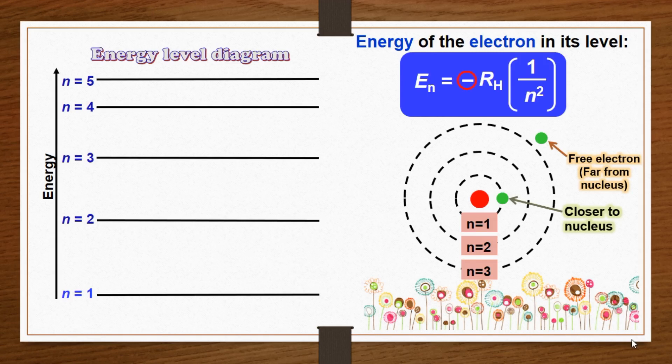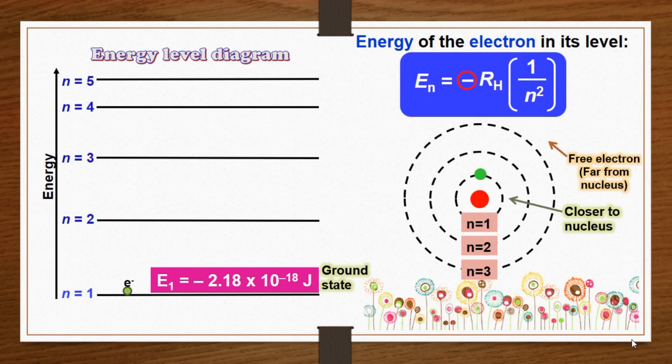As the electron gets closer to the nucleus, En becomes larger in absolute value but also more negative. The most negative value is reached when n equals 1, which corresponds to the most stable energy state that is called the ground state or ground level.